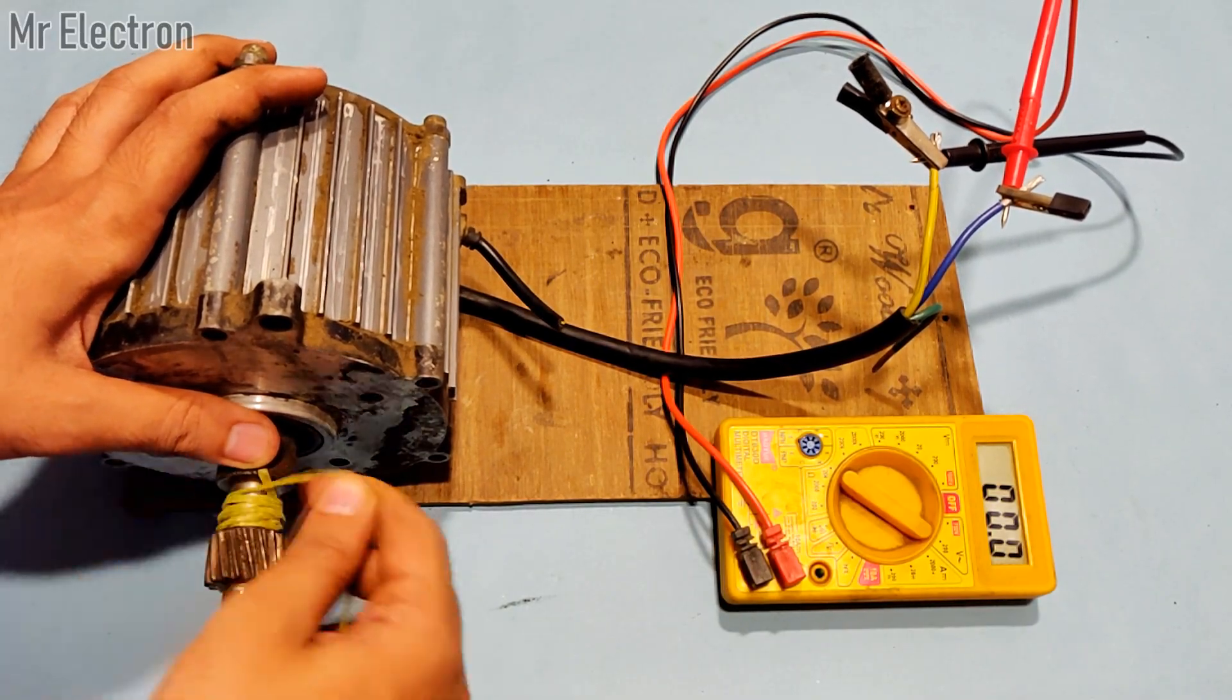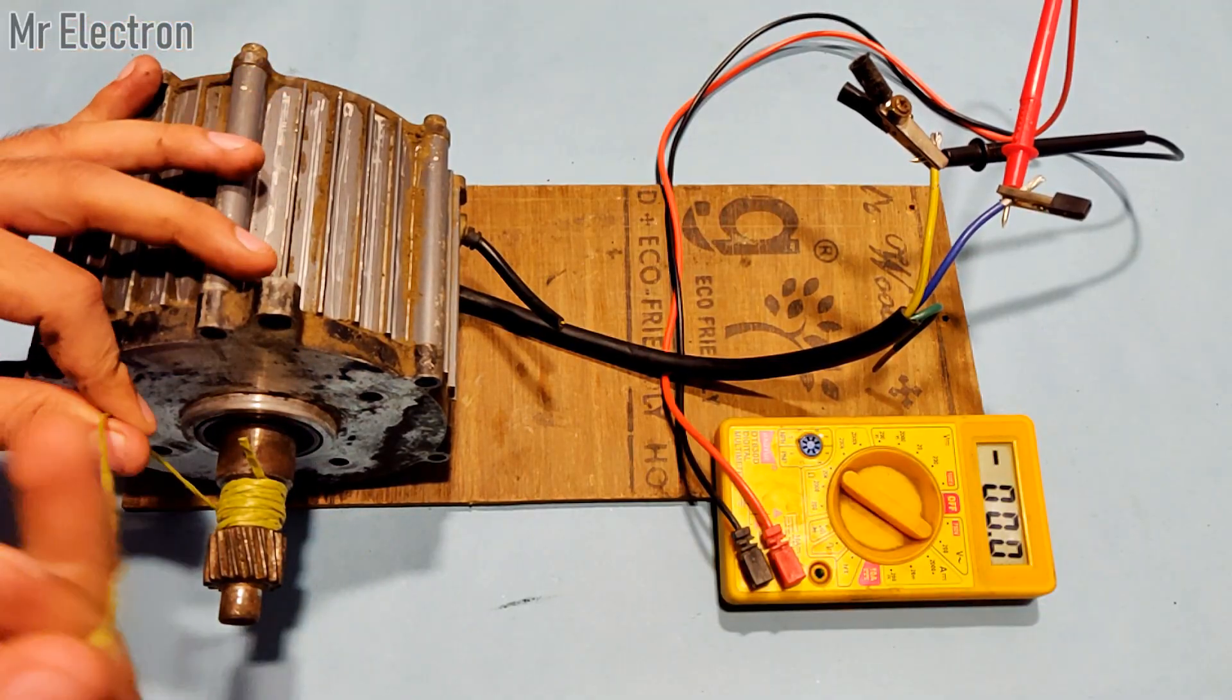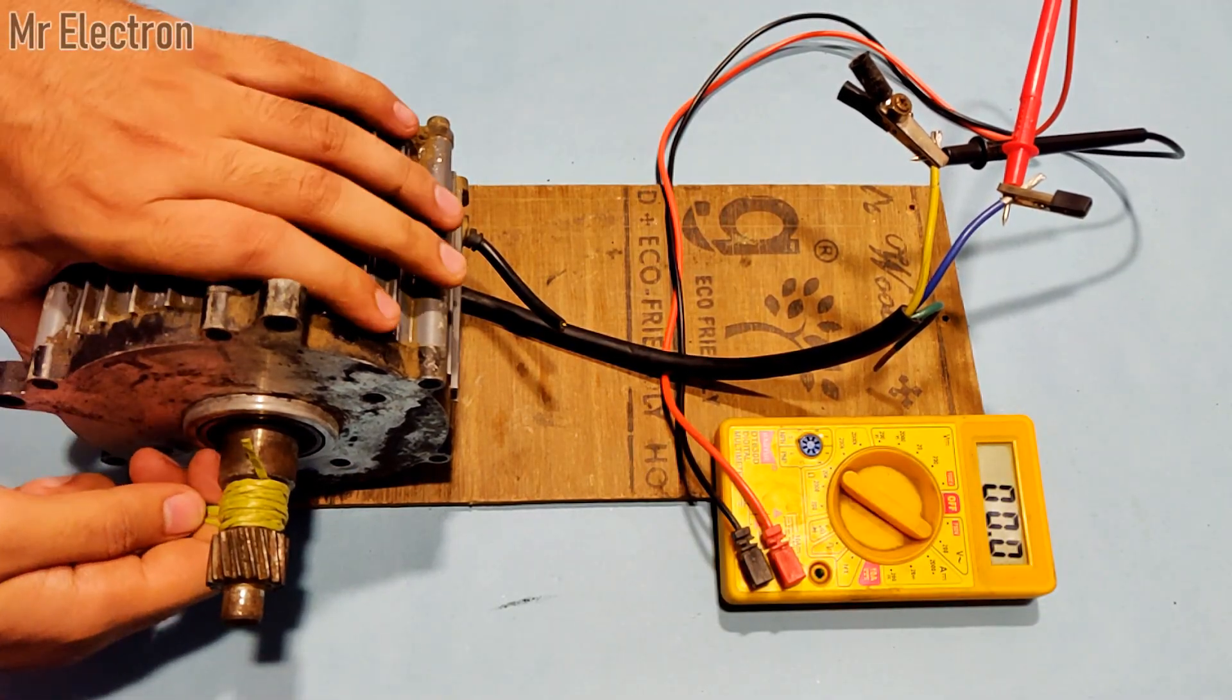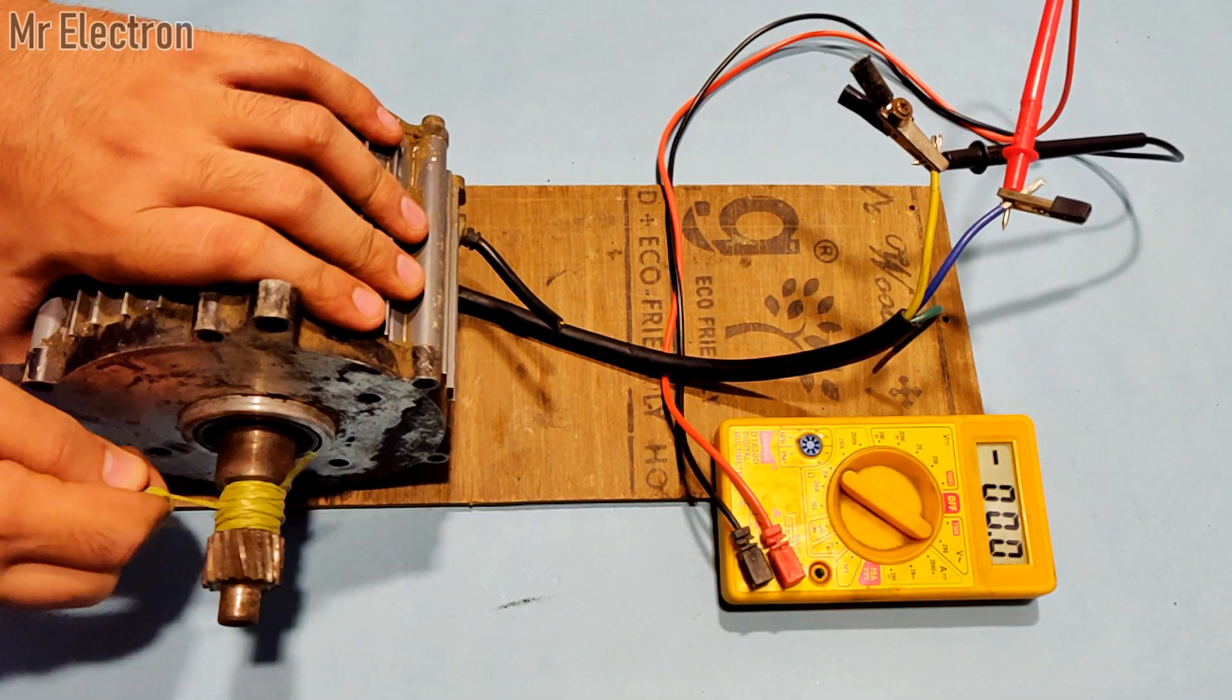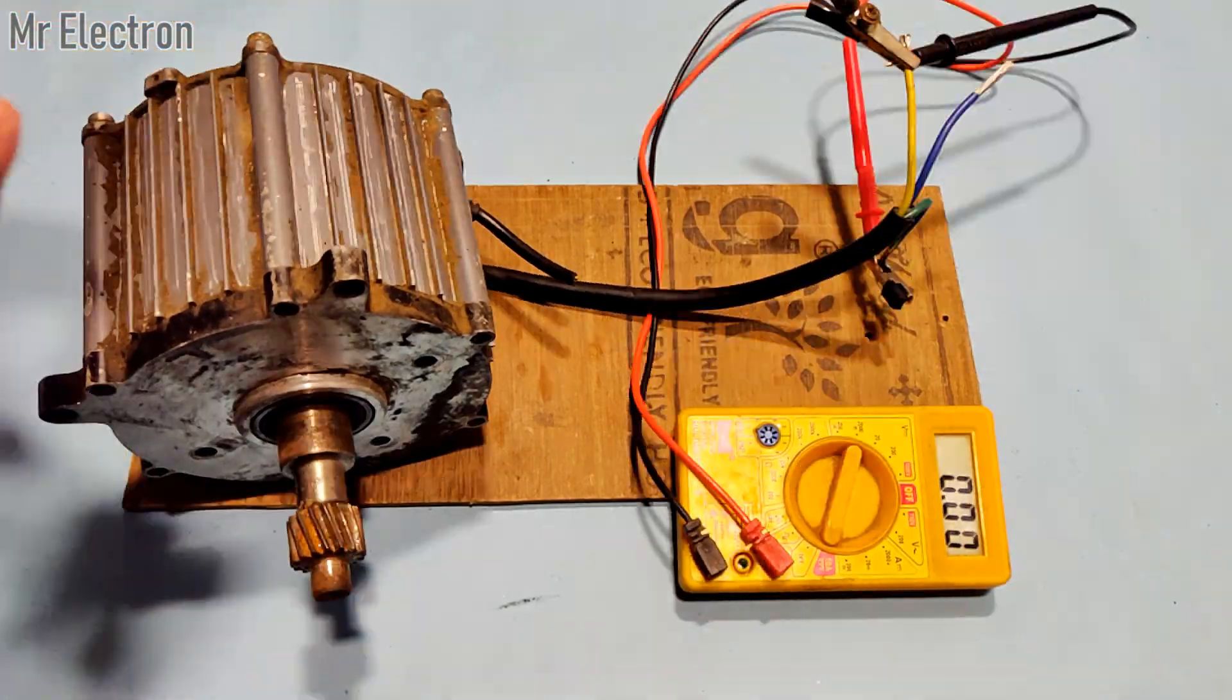Now I'm going to use a plastic rope to rotate the shaft of this BLDC motor at a little higher RPM and let's see how much voltage I can obtain. You can see that the maximum voltage I achieved was 14.6 volts with the rope.